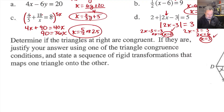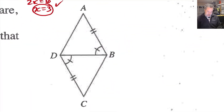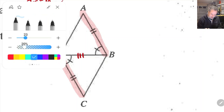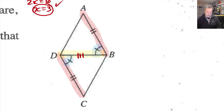The last question: determine if the triangles are congruent. By the reflexive property, segment DB is congruent to segment DB. Using that shared side, I can identify side-angle-side: this side, this angle, and the shared side down the middle belongs to both triangles. By side-angle-side, these two triangles are congruent — congruent by SAS congruence.